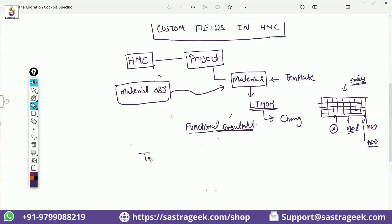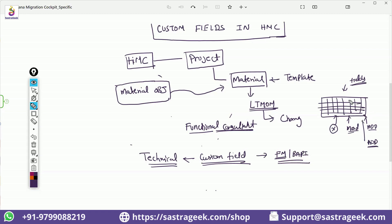Technical consultants, whenever they are creating a custom field, if they do it the standard way given by SAP, any time you add a custom field it also updates the function modules and the BAPIs which are used to upload the data. They need to make sure that once you are adding custom fields to an object, the function modules and BAPIs also get updated automatically. The custom fields are available in the BAPIs, so once you add them you need to also map this field — which field in the BAPI this field would be mapped to so the data will flow.